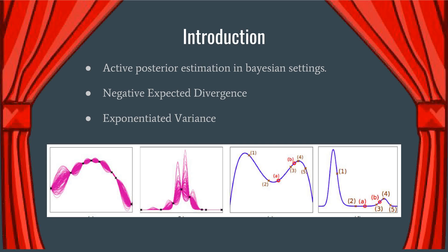The paper focuses on active posterior estimation in a Bayesian setting. Existing methods depend on generating samples to represent the posterior, which is inefficient. The research paper presents two methods, namely negative expected divergence and exponentiated variance, for deciding where to evaluate likelihood and demonstrate its efficiency with respect to other methods.